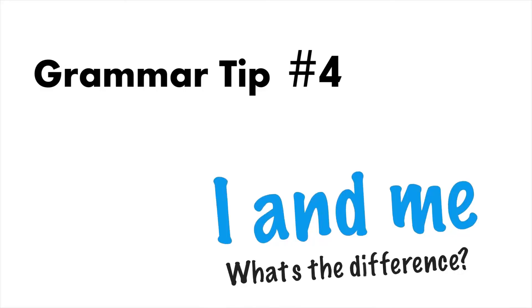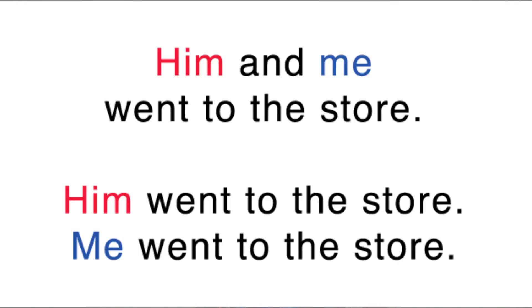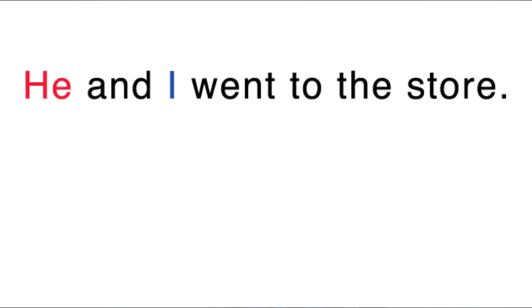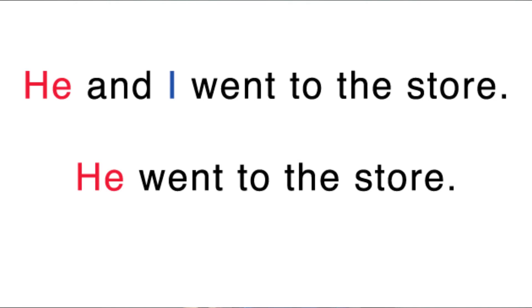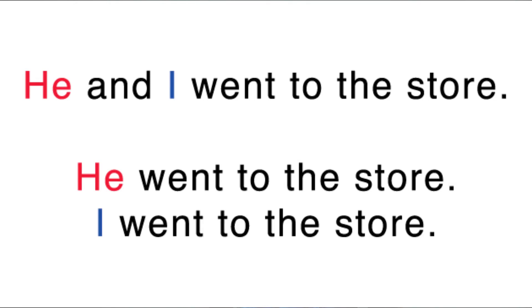Now, topic number four: when to use 'I' or 'me.' You've probably heard this one used incorrectly before, but there's a very simple trick to learning this grammar rule. Let's say you have the sentence 'him and me went to the store.' At first glance it looks okay, but when you break the sentence apart, you realize it's not correct. Would you ever say 'him went to the store'? How about 'me went to the store'? Probably not, right? That's how you know it's not correct. Revise the sentence to 'he and I went to the store.' Let's check using our handy dandy new trick: 'He went to the store.' 'I went to the store.' Both of those sentences look good to me.